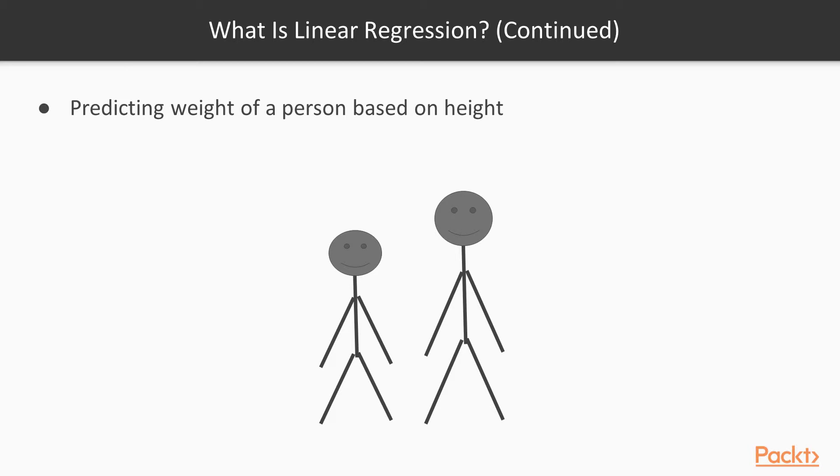Let's try to understand linear regression with the help of an example. Suppose you want to predict the weight of a person based on his height. So what you do is create a dataset of different individual heights and their respective weights.